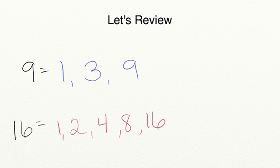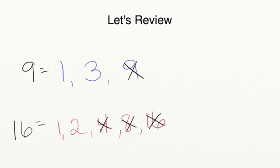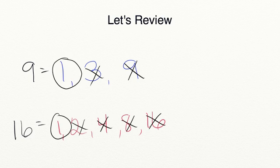When trying to find the greatest common factor, we start with the largest numbers first. Neither number shares the factors 9, 16, 8, 4, 3, or 2. Which means the greatest common factor for these two numbers is 1.